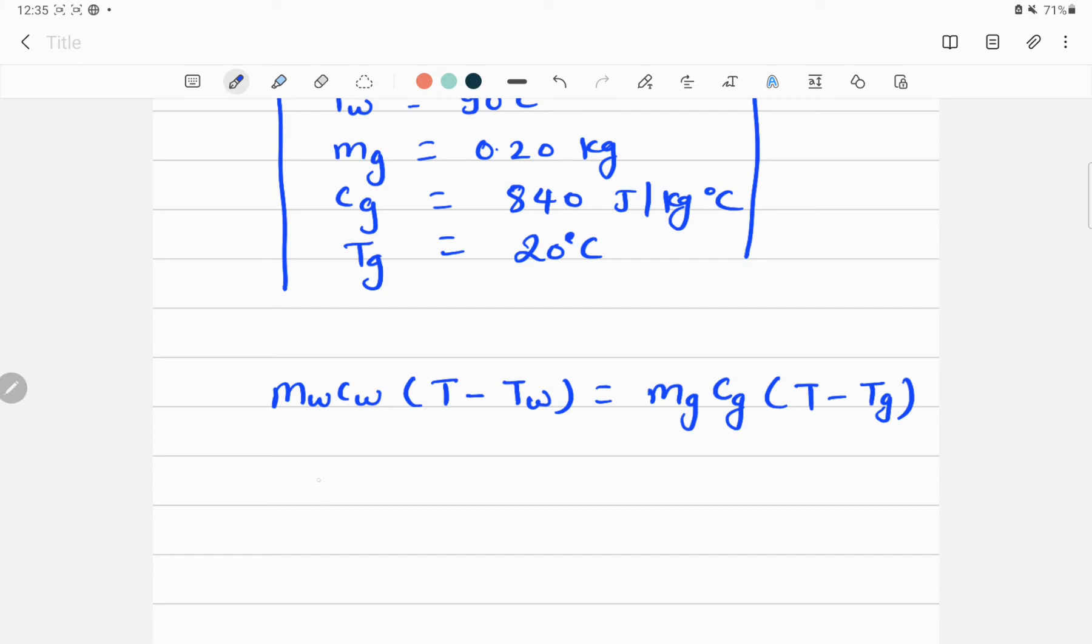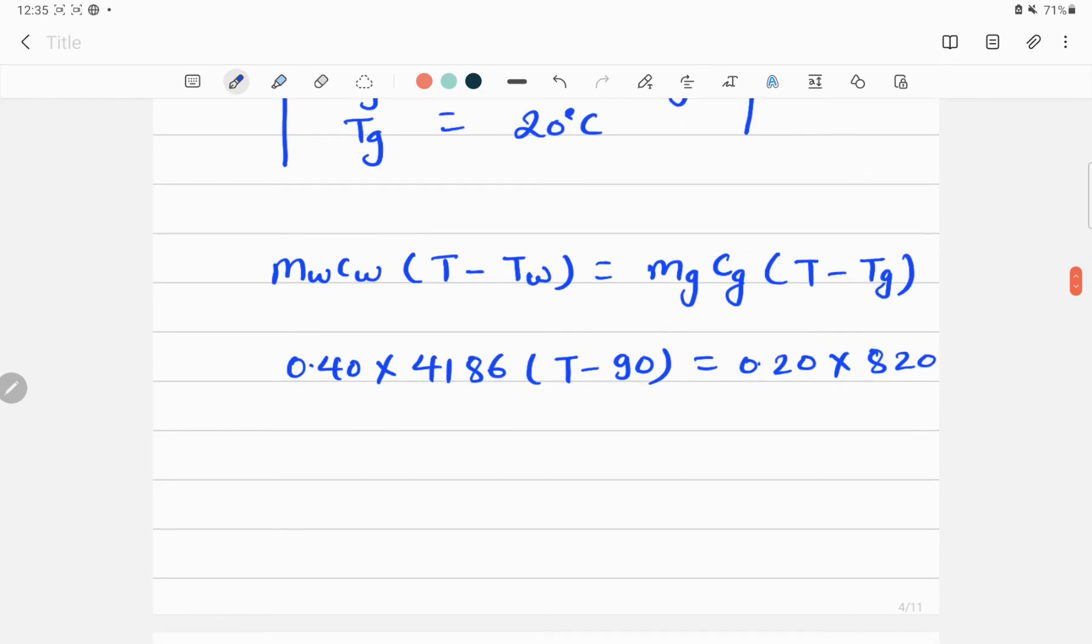So putting all these values here in this equation, let me put all these values: 0.40 multiplied by 4186, and then T minus 90. I'm just writing without units so that it will be clear. Plus 0.20 multiplied by 820, and then T minus 20, is equal to 0.